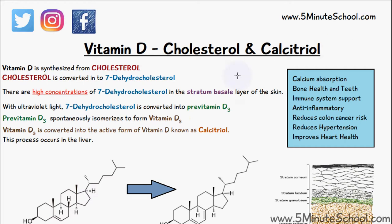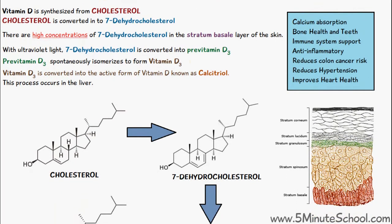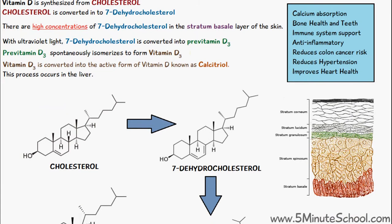Vitamin D has quite a few functions within the human body, some of them very important. It's able to help with calcium absorption, which ensures that the bones and teeth of the body are healthy. It's also responsible for immune system support, has an anti-inflammatory function, reduces the risk of colon cancer, reduces hypertension, and improves heart health. This is just some of the many functions of vitamin D.